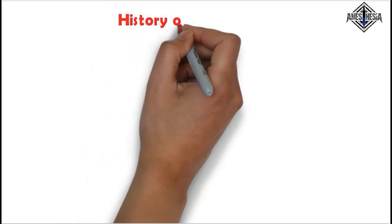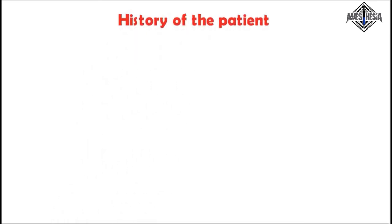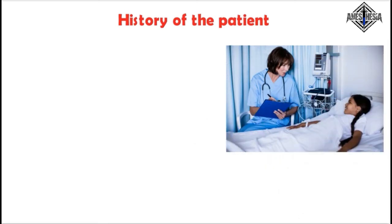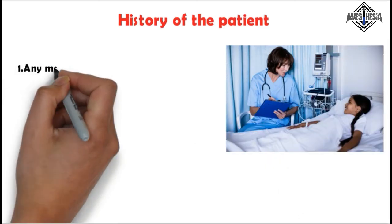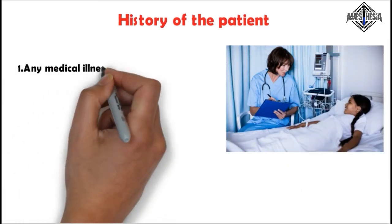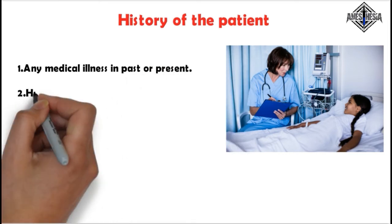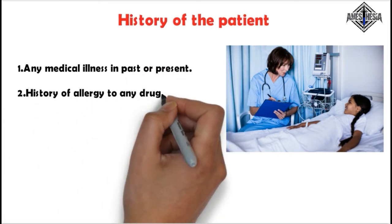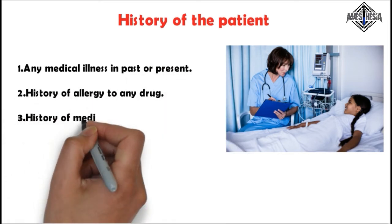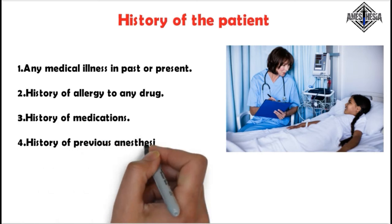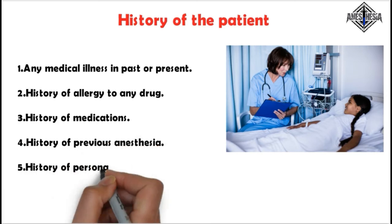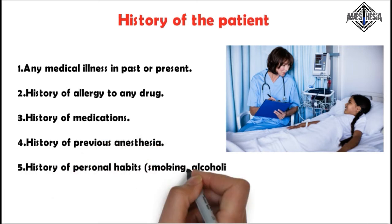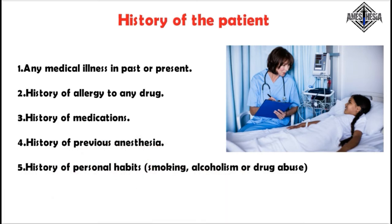Then collect the history of the patient. This contains the following five things: any medical illness in past or present, history of allergy to any drug, history of medications, history of previous anesthesia, and history of personal habits such as smoking, alcoholism, or drug abuse.